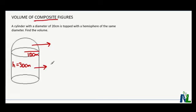The formula for volume of a cylinder is πr²h. The formula for volume of a hemisphere is half of a sphere. Remember that a sphere is 4/3 πr³.